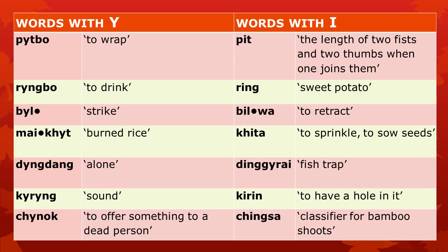On the left, you see words with the letter E, and on the right, you see words with the letter Ö. Let me read them for you so that you can hear the difference in pronunciation. I will read them from left to right without the English translations.